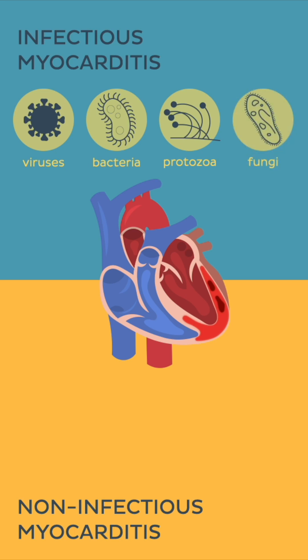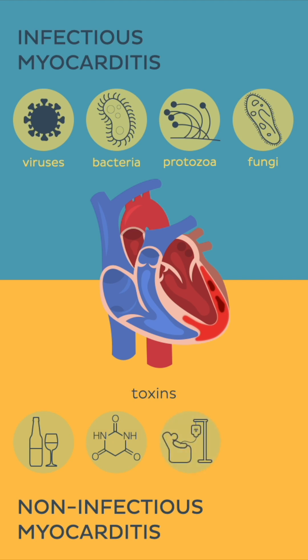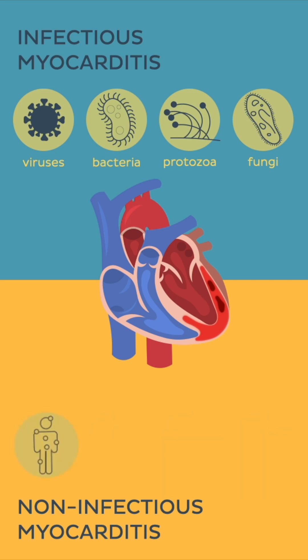Myocarditis can also result from non-infectious causes. Toxins like alcohol, heavy metals, chemotherapeutic agents, barbiturates and antipsychotics can damage the heart muscle. It can also be a result of autoimmune diseases such as sarcoidosis, systemic lupus erythematosus, scleroderma and vasculitides.